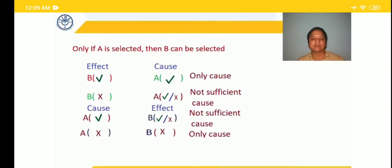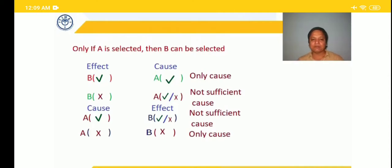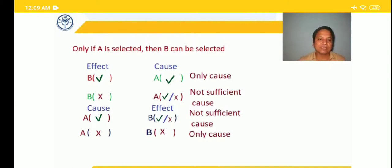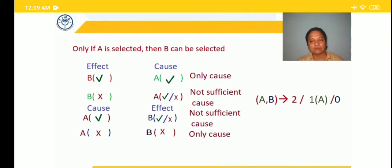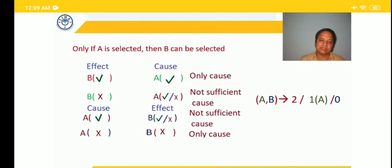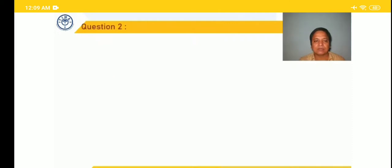But if the cause doesn't happen — A is not selected — and for the effect this was the only cause, then effect will also not happen. So if A is not selected, B will also not be selected. If B is selected, A will also be selected. These are the two short conclusions we can draw. In short form, out of A and B, either both will come, or one — that is A — or none will come.